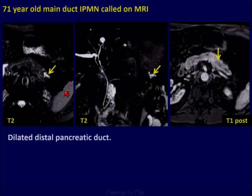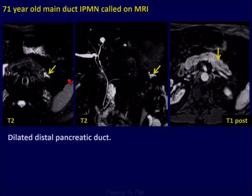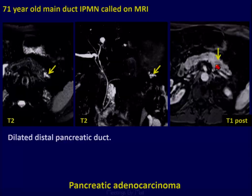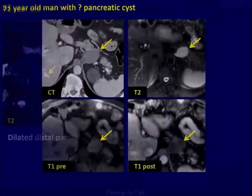This one is a little bit more challenging. This is a case where it was suspected to be main duct IPMN in the tail of the pancreas, but when you look more carefully, there is pancreatic adenocarcinoma here, resulting in dilatation of the distal portion of the pancreatic duct. So be very careful when you see a focally dilated pancreatic duct.